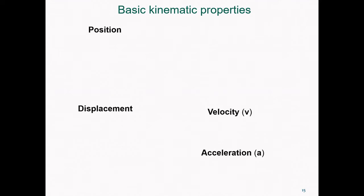We can characterize the motion of an object based upon its kinematics. Basic kinematic descriptors include position, displacement, velocity, and acceleration. Position is the location of an object in space — within a particular reference system. On this slide, I'm going to be talking about positions in terms of translations, but as we'll do later in the class, I could be talking about angular position.